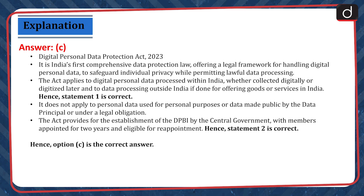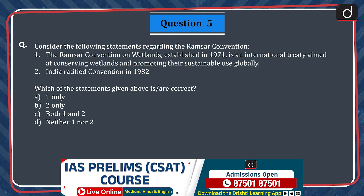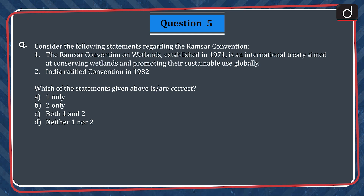Hence, option C is the correct answer. Question 5. Consider the following statements regarding the Ramsar Convention. 1. The Ramsar Convention on Wetlands, established in 1971, is an international treaty aimed at conserving wetlands and promoting their sustainable use globally. 2. India ratified the convention in 1982. Which of the statements given above is or are correct?